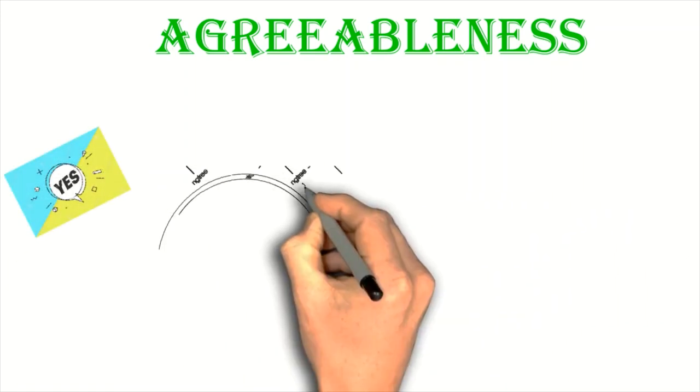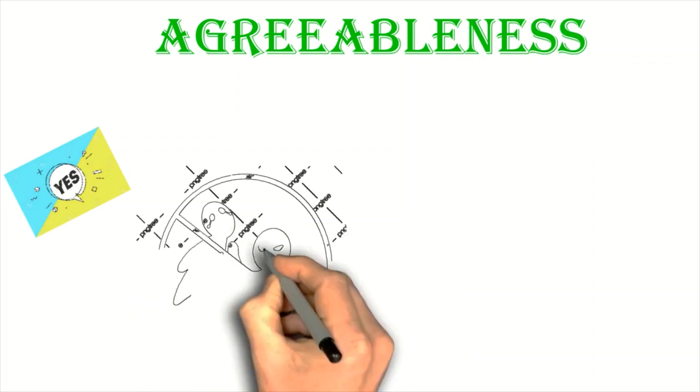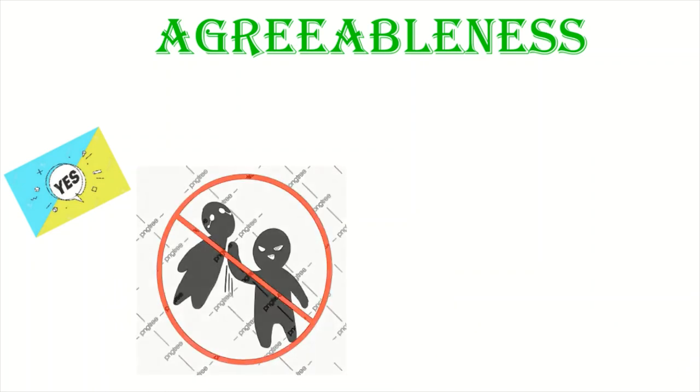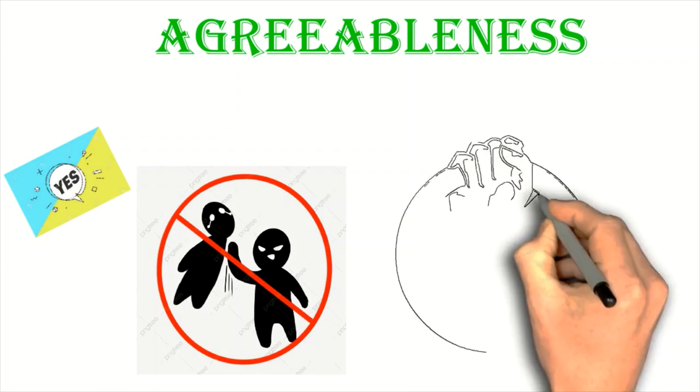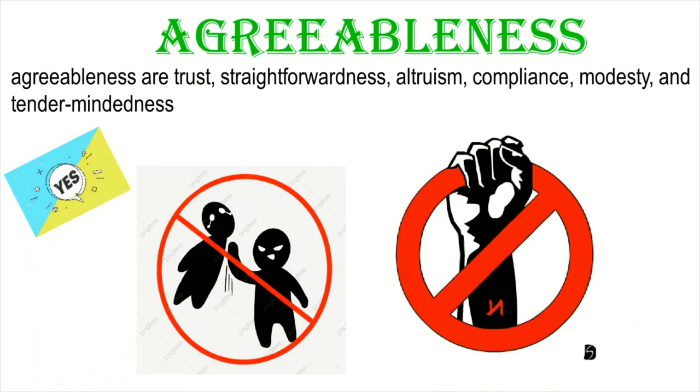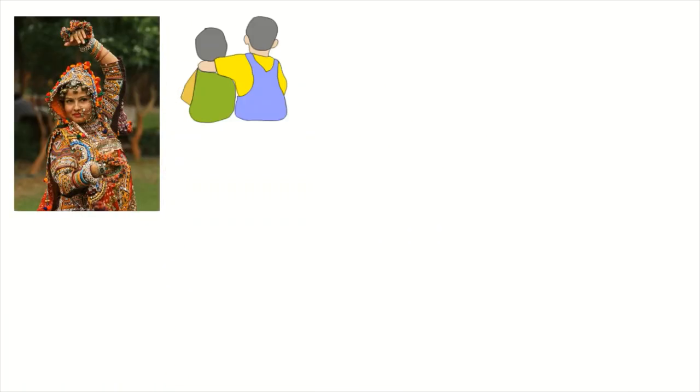Our next category is agreeableness. This category is much more cooperative than the other ones. They are friendly and always want to help others. They accept opinions easily. They don't want to keep their power. They care about people.